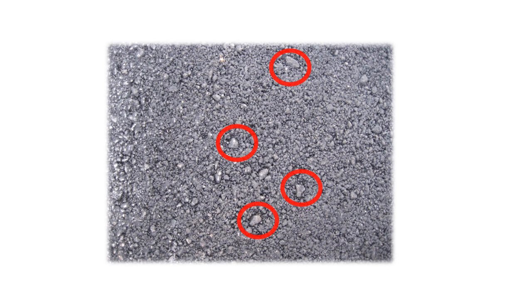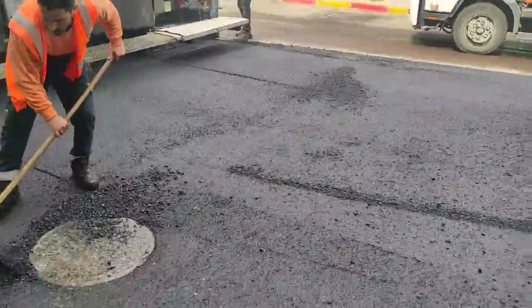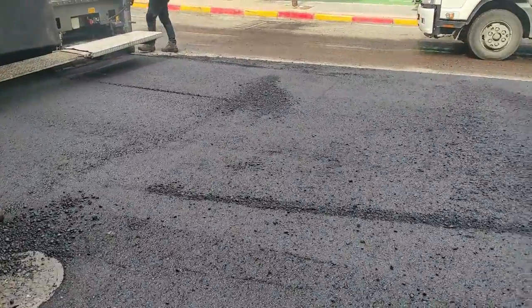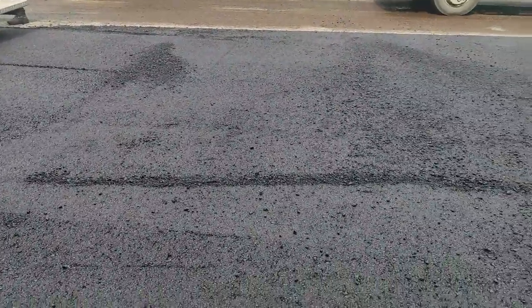The coarse aggregates will be sunken but not properly embedded in the upper layer. They will be the first to pop out. This is also segregation. Look again at the team's work and watch closely for these aggregates.